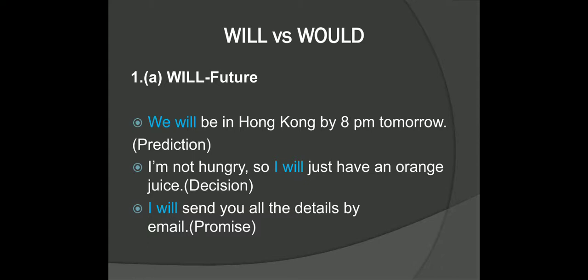Take this sentence: 'We will be in Hong Kong by 8 pm tomorrow.' That means we are traveling to Hong Kong and I expect that if our flight is on time, we will be there by 8 o'clock tomorrow night. Another sentence: 'I am not hungry so I will just have an orange juice.' Here will is used to express a decision that you have made. We also use will to make a promise, like 'I will send you all the details by email.'